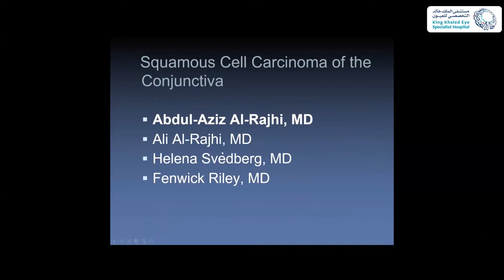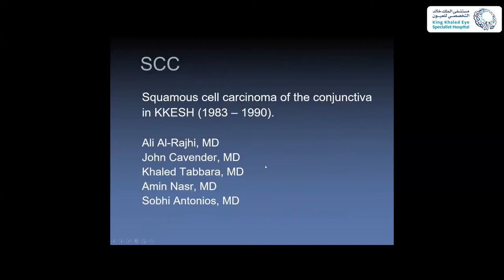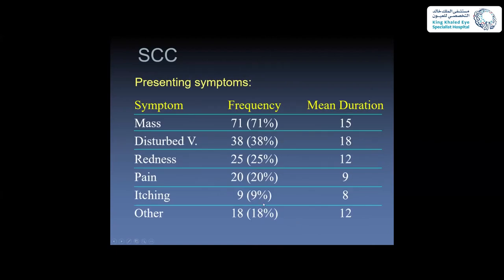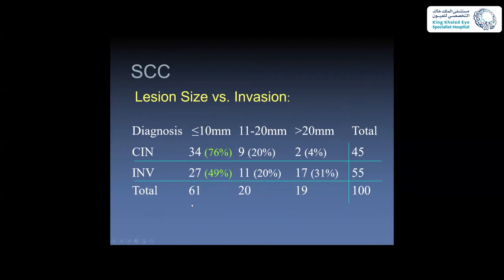In a study at KKESH with 100 eyes and a minimum six-month follow-up, five patients had bilateral involvement. The most common presenting symptom was mass lesion, followed by severe division, redness, or pain. There is correlation between lesion size and invasion — the larger the size, the more invasive: 31% versus 4%. Tissue involvement, especially with intraocular invasion, is most commonly the cornea, followed by sclera, then ciliary body and other tissues.